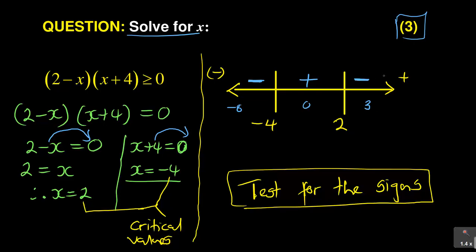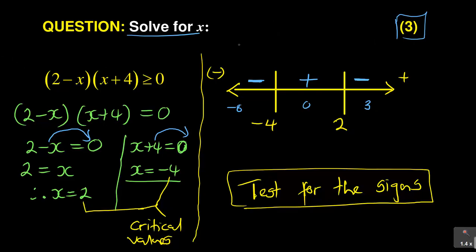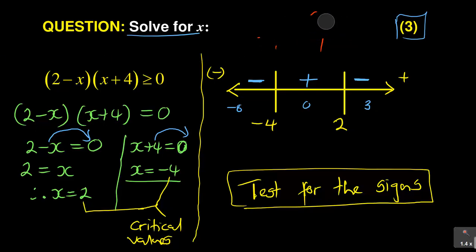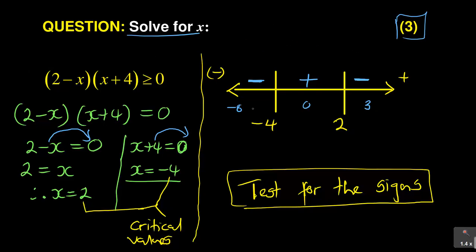There are only two possible sign patterns you'll ever get when dealing with two critical values. Either it's negative, positive, negative — or positive, negative, positive. You will not get minus, minus, plus, or plus, plus, minus, or all positives, or all negatives. In this case, we are getting negative, positive, negative.